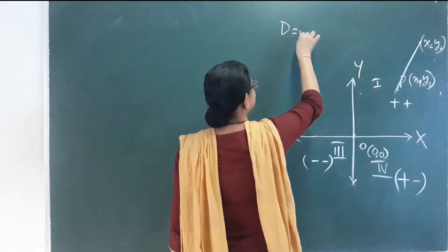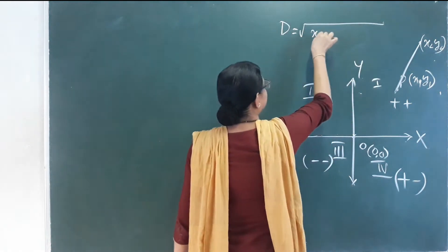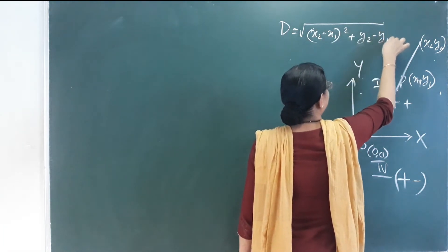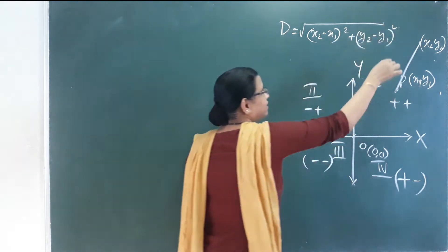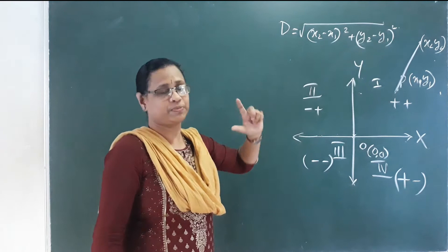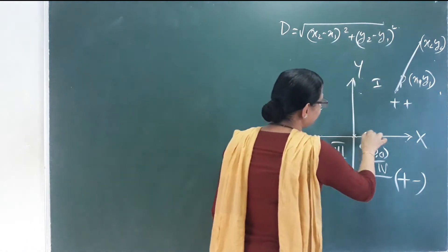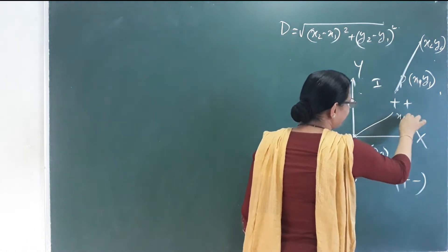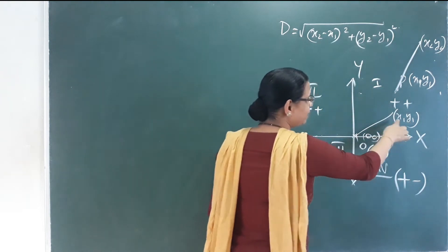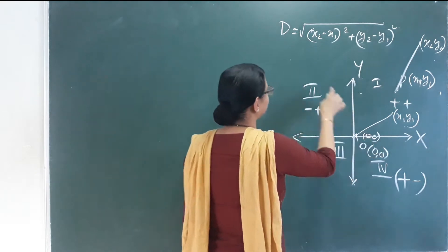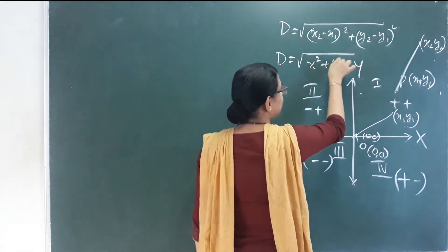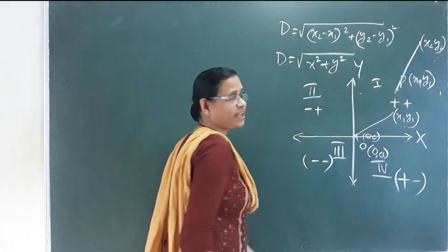The distance between point (x2, y2) and point (x1, y1) — if the point is at the origin (0, 0), then what is x1 minus 0 squared? The distance from the origin is the formula: root of x2 squared plus y2 squared.